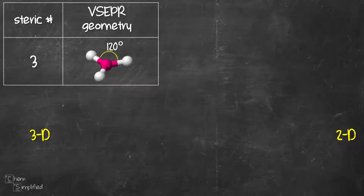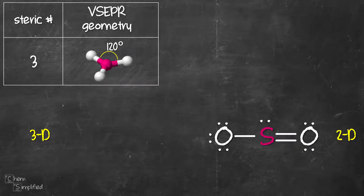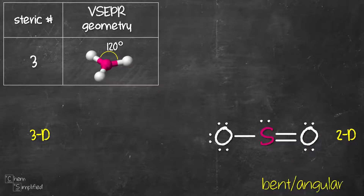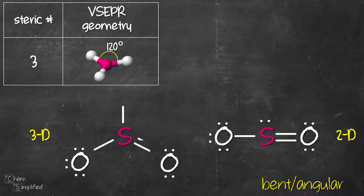Staying with steric number 3, let's look at SO2. In this Lewis structure, you can see it has steric number 3 due to three groups: one single bond, one double bond, and one lone pair. However, because we have a lone pair on the central atom, the shape for this molecule is no longer triangular — instead it's bent, sometimes called angular. To draw SO2 in 3D, we start with S in the center and draw out three lines at 120 degrees from each other. We place the two oxygens with a double bond, remove the extra bond, and add in the lone pair. Since SO2 has steric number 3, all the atoms are in the same plane.